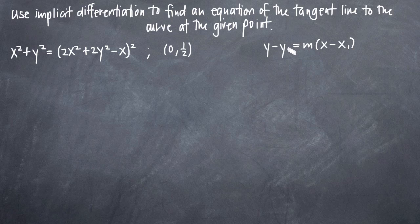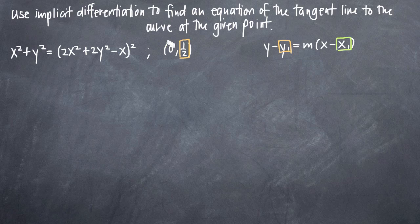Remember that the equation of the tangent line can be expressed in point-slope form: y minus y₁ is equal to m times x minus x₁. We're looking for three values. We have y₁, which we can get from the point that we've been given — that's already going to be 1/2. We have x₁, which again comes from the point we've been given, and that will be 0. The only thing we really need to find here is m, the slope of the tangent line at the given point.